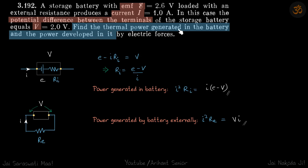We need to find the thermal power generated in the battery and the power developed in it by electrical forces. Power generated in the battery is I²RI and power developed is I²RE. The language might be a bit confusing, so that's why I am explaining.